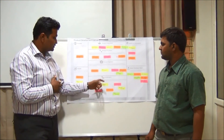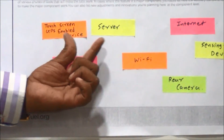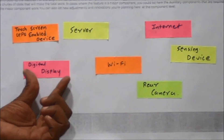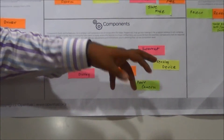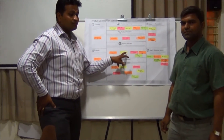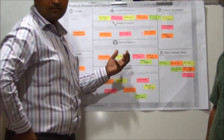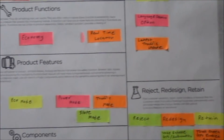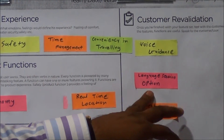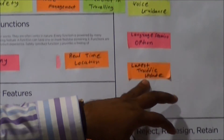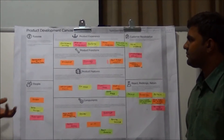For these features, the required components are a touch screen, GPS-enabled system, server, internet, digital display, Wi-Fi facility, rear camera, and a sensing device which will sense the surrounding environment as per the driver's selection of these modes. For customer re-validation, some have guided us that voice guidance is required for this type of development system. For voice guidance, selection of language is necessary, and the latest traffic updates are also required. This is all about our product development canvas.